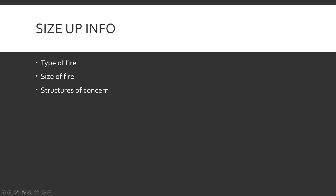Some of the info that goes into size-ups: What type of fire is it — is that a creeping fire, is it a crown fire? How big is it — is it a football field, two football fields, about 10 yards by 10 yards, a little thing in a ditch somewhere? Rough estimates. Any structures of concern — is it burning towards a farm or a subdivision? Are you in a corn field but it may be getting up into the trees in the near future, giving you a whole other problem to worry about?